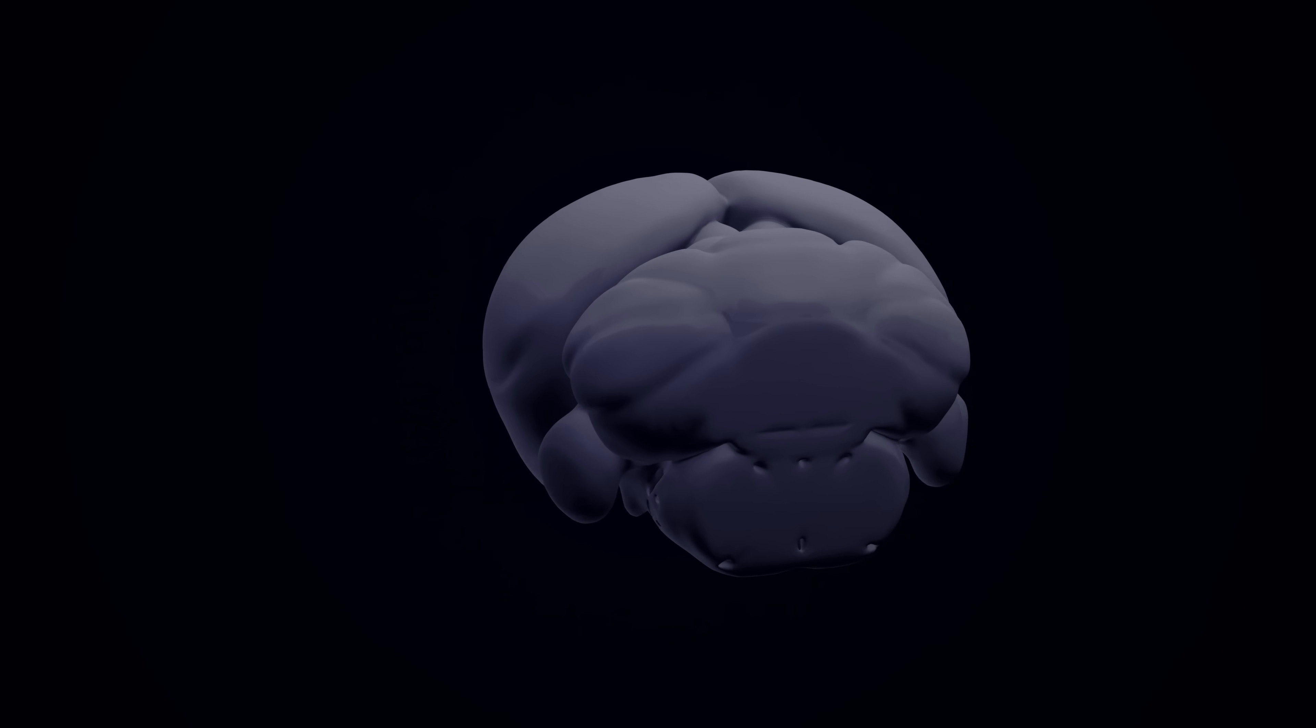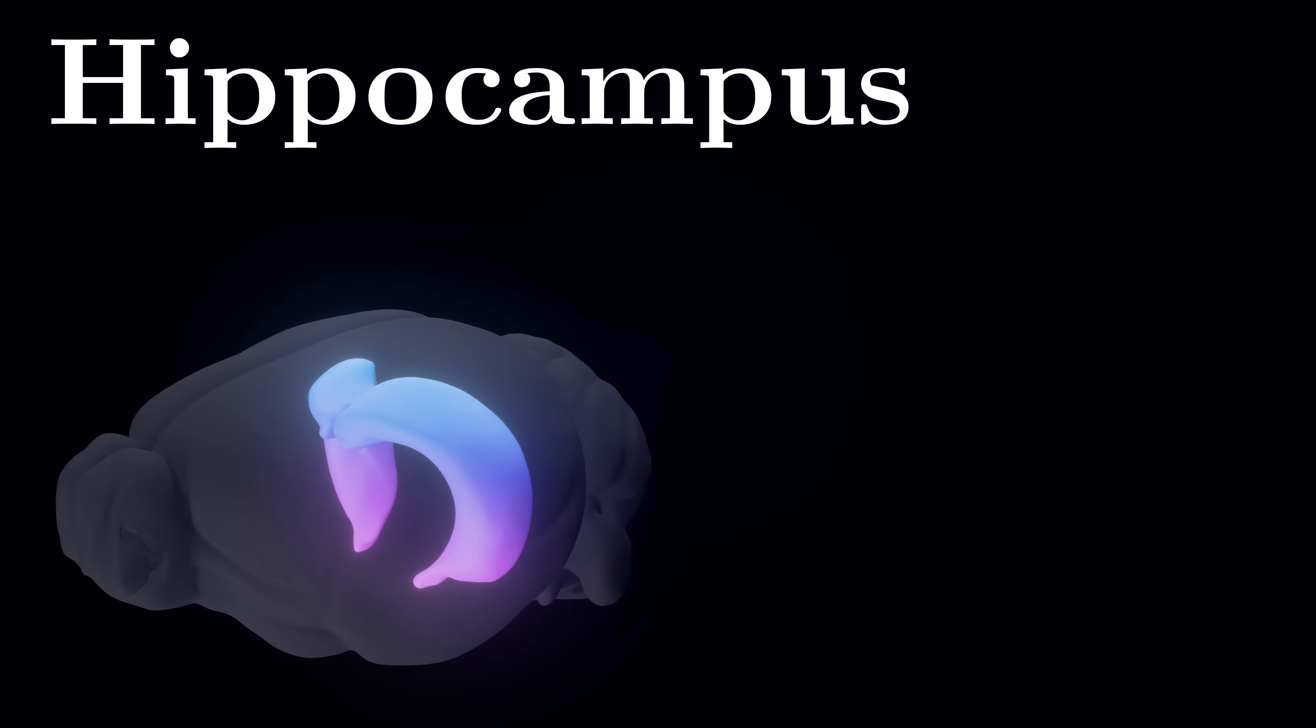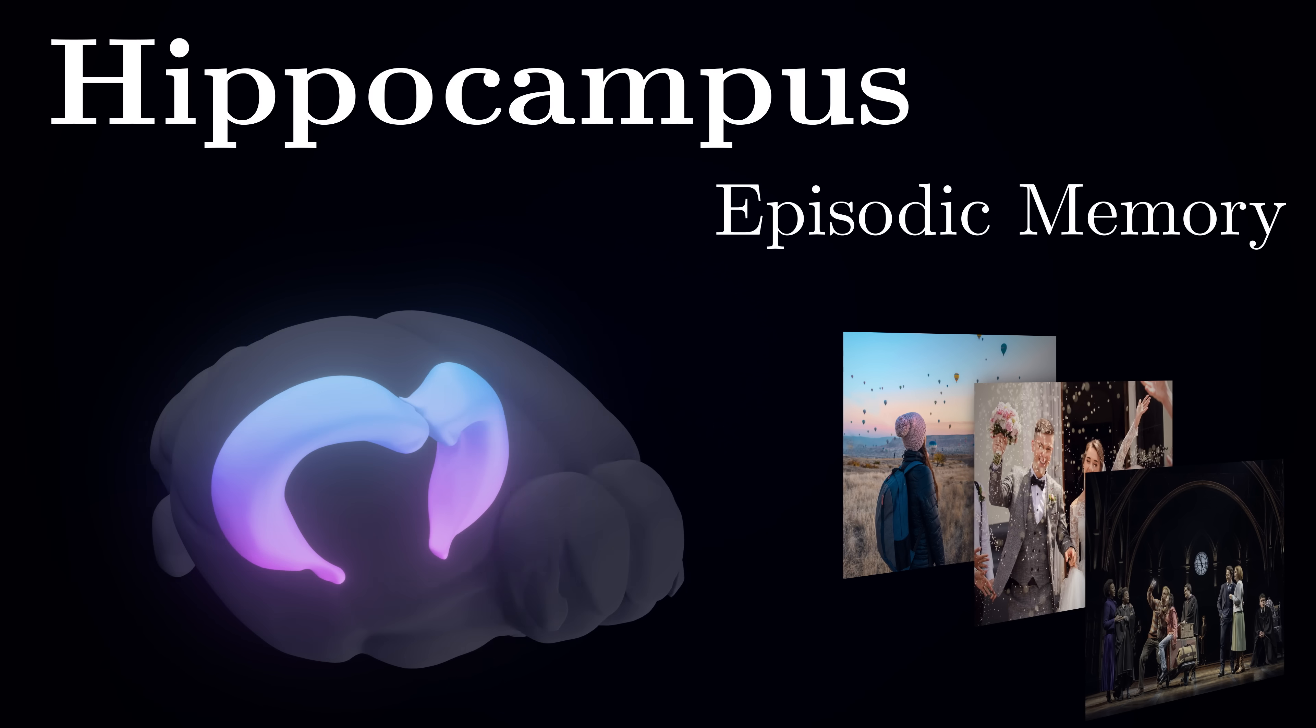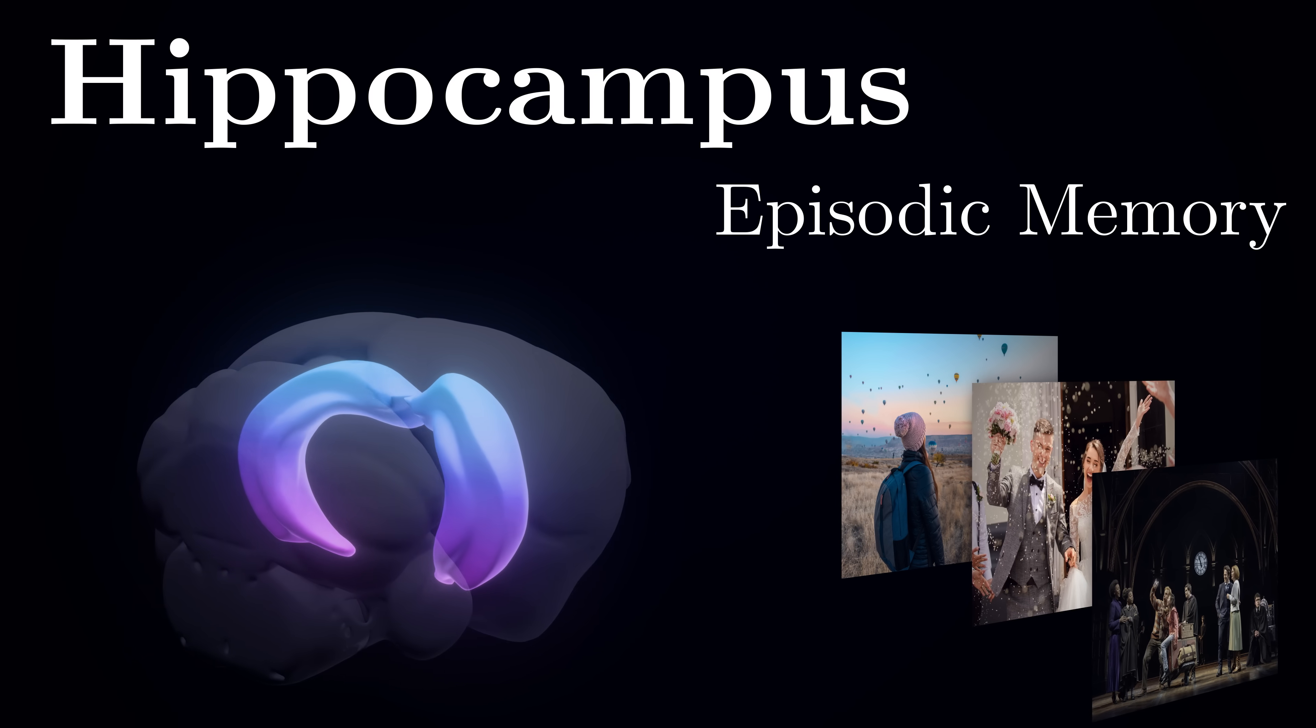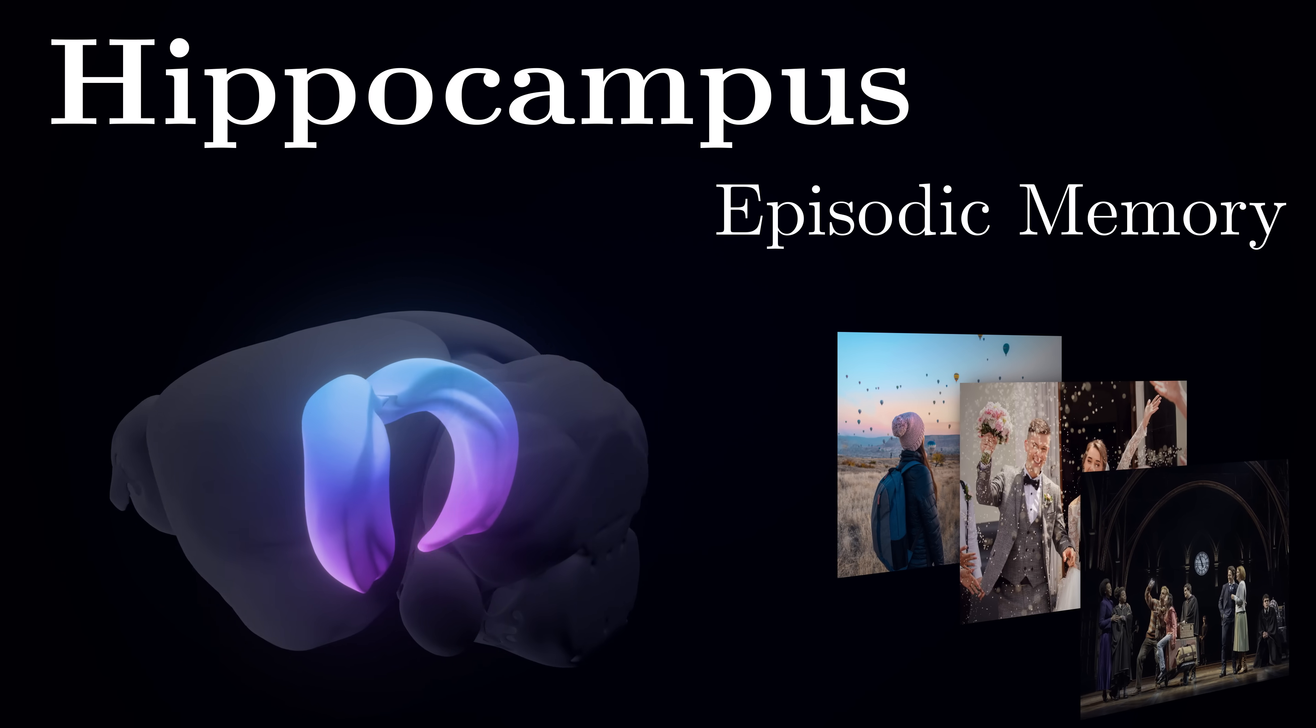To solve this puzzle of memory selection, we need to look deep inside the brain at a seahorse-shaped structure called the hippocampus. It plays a crucial role in episodic memory – our ability to remember personal experiences as sequences of events in temporal order, like remembering what happened this morning, or on your first day at a new job.